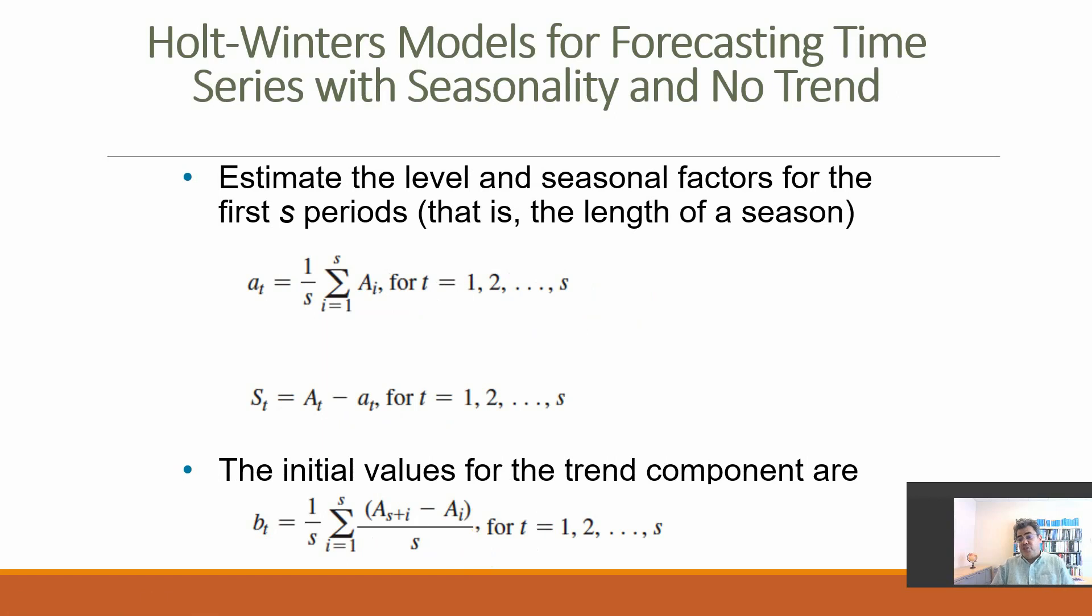However, what about the initial numbers, and the initial numbers are an issue for the Holt-Winters models. So the A, A T is the average of the first year, or the, of data, for quarters or 12 months. ST, actual number minus A T, for all of our seasonal components. However, for the trend, the formula is a little bit more complicated.